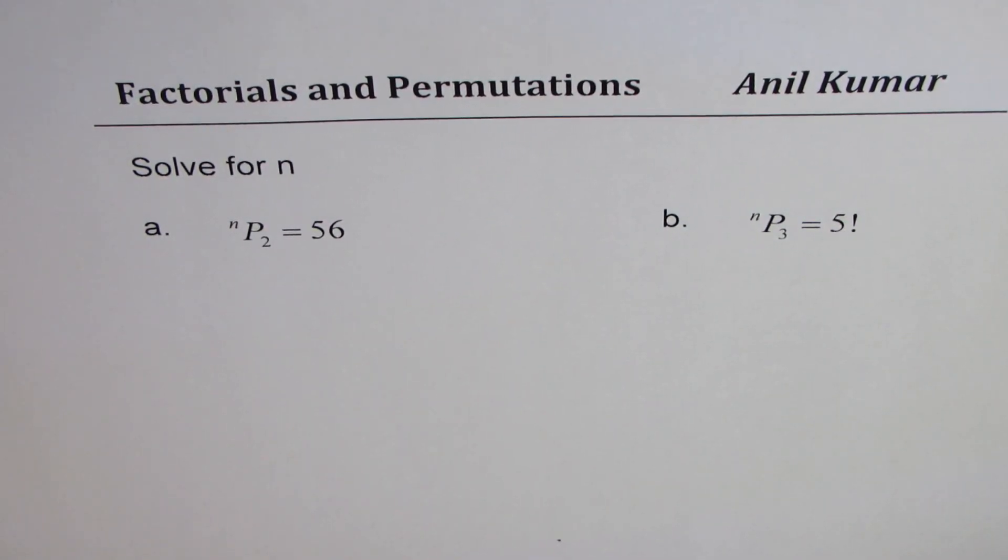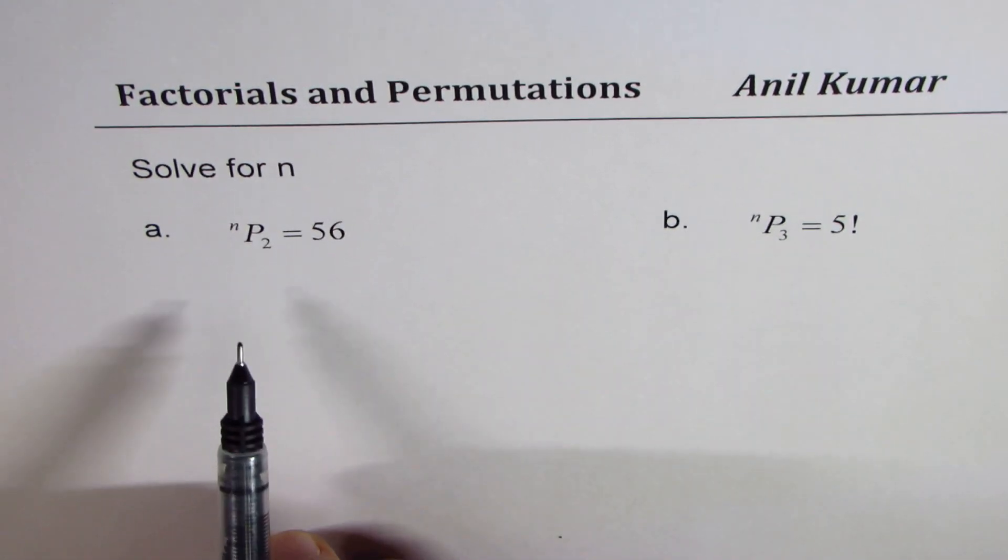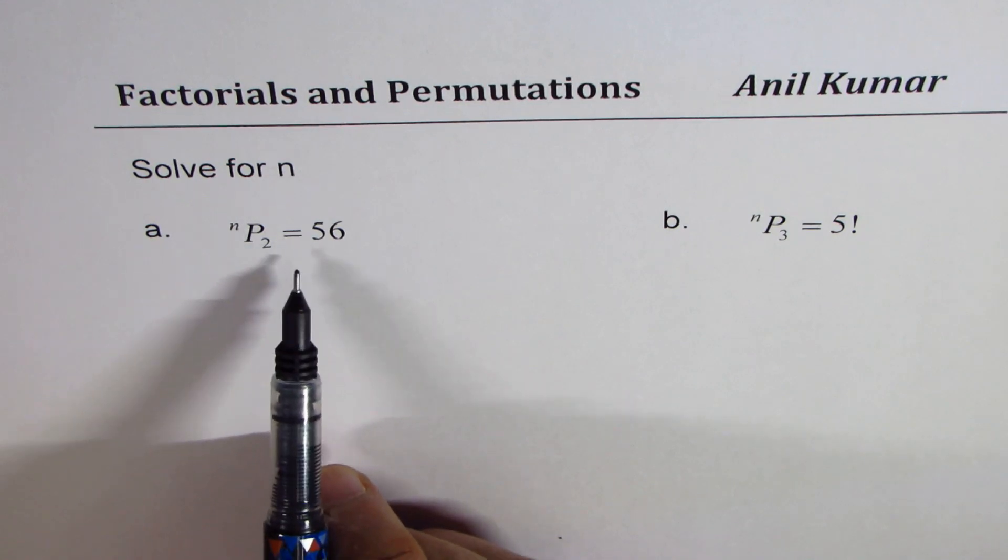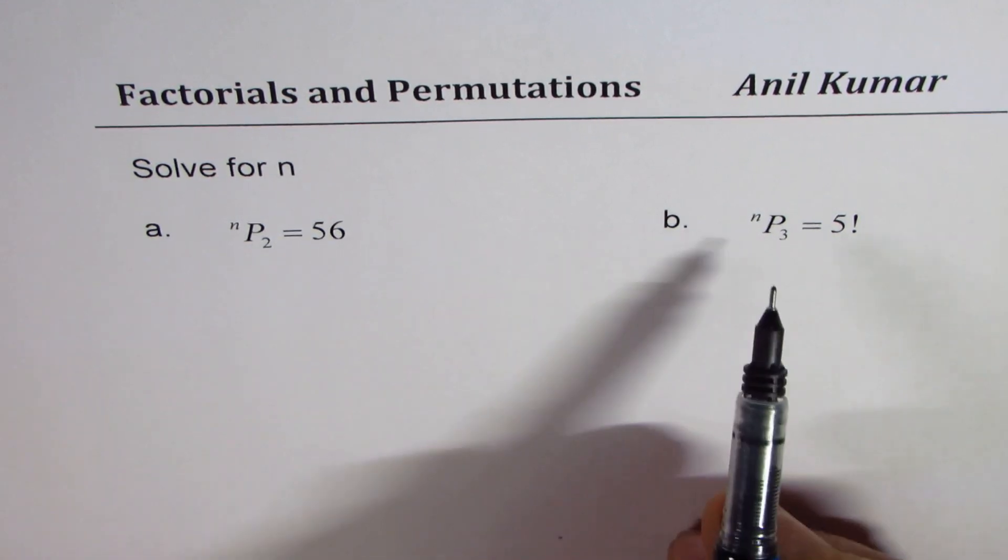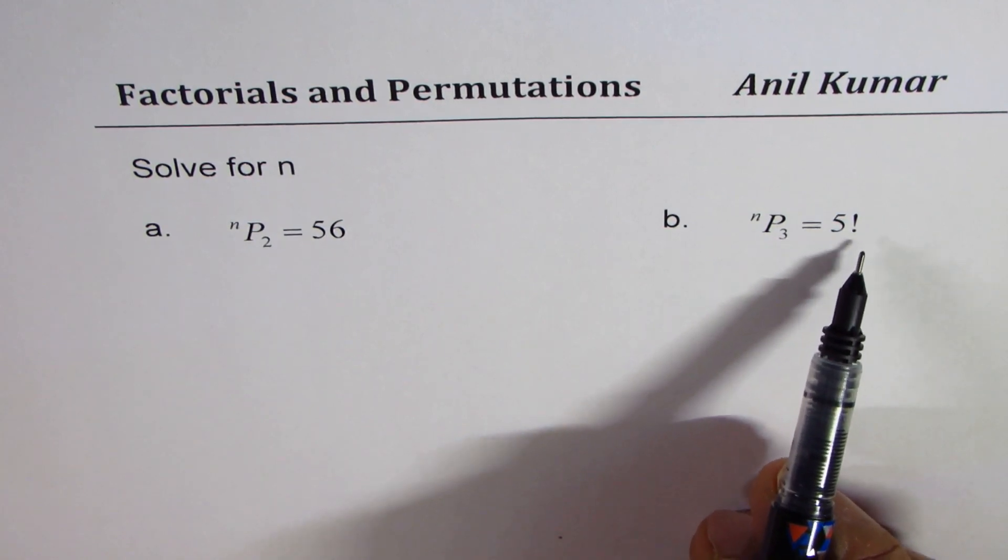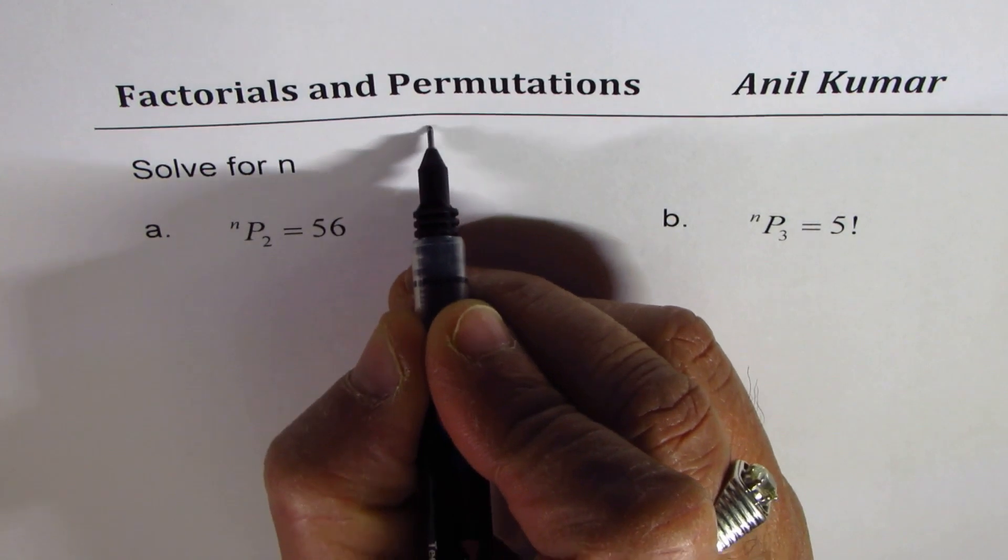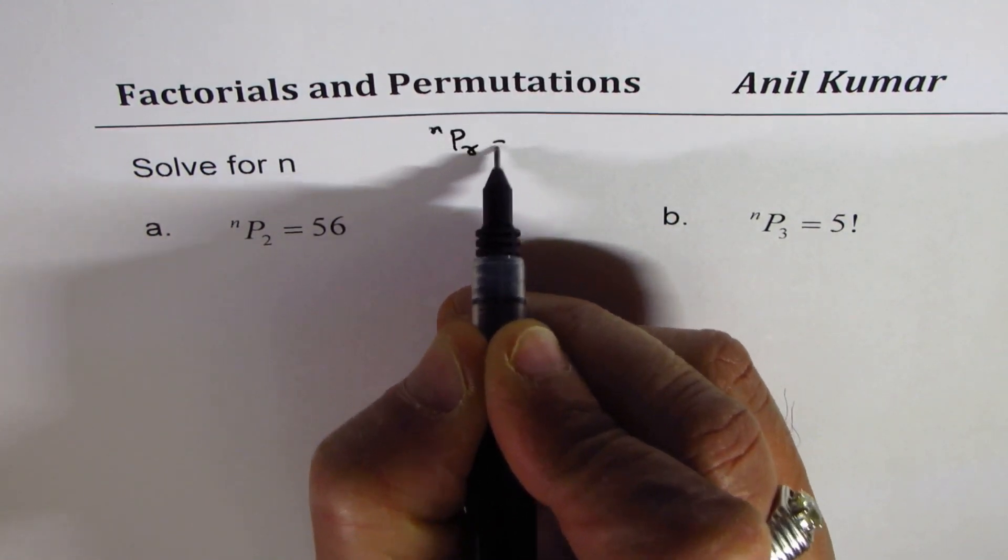I'm Anil Kumar and in this video we will learn a strategy to solve questions involving permutations and factorials. The question is to solve for n. We have two parts: first one nP2 equals to 56, and then we have nP3 equals to 5 factorial. You have to find the value of n.